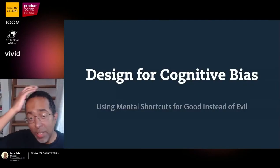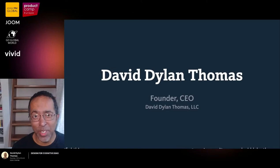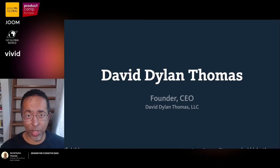Today I'd like to talk about designing for cognitive bias — using mental shortcuts for good instead of evil. My name is David Dillon Thomas and I run a company called David Dillon Thomas LLC. I basically go around and get people excited about and give them tools for more inclusive design.